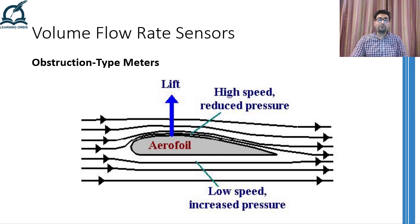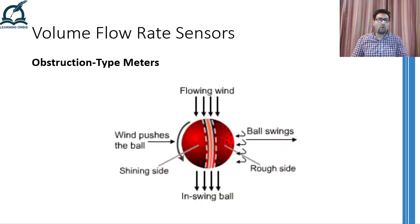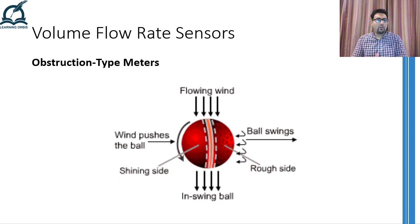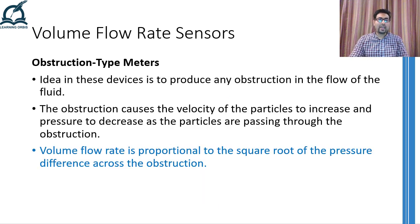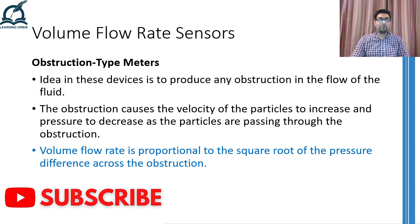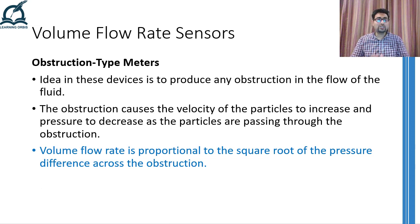This fact is responsible for creating an uplift when an aeroplane is running on the runway and hence is able to fly. Moreover, the same reason is behind a baseball ball or a cricket ball swinging when it is delivered by the bowler. So all the obstruction type meters are going to increase the speed of the flowing fluid, which will cause its pressure to drop. The volume flow rate can then be measured by measuring the pressure difference across this obstruction. In fact, the volume flow rate is proportional to the square root of the pressure difference across the obstruction.